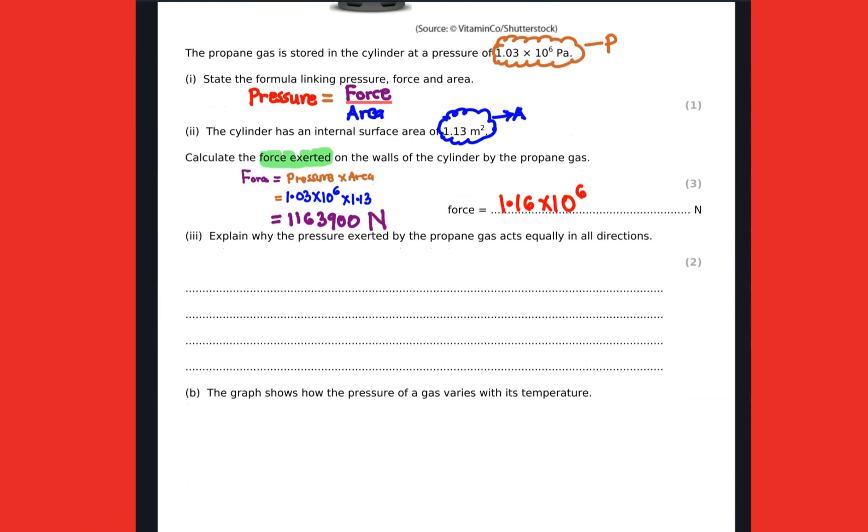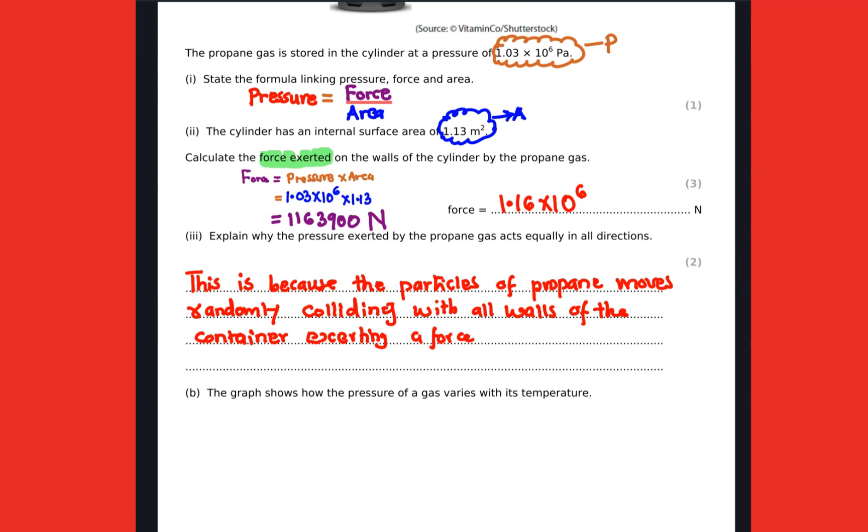Our answer is going to be, if we use our calculator and write it in standard form, 1.16 times 10 to the power 6 newtons. Next we are supposed to explain why pressure exerted by propane gas is equal in all directions. This is because the particles of propane move randomly, colliding with all walls of the container, exerting a force. Force per unit area exerted is the same on all sides, hence pressure is the same in all sides.